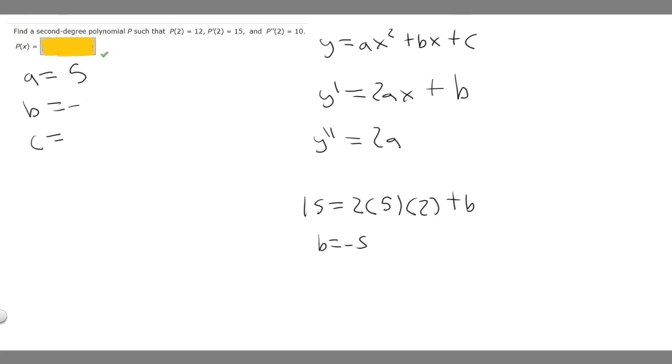Now that we've got b and a, we need to solve for c using this formula. y is 12, so 12 = a (which is 5) times x (which is 2) squared, plus b (which is -5) times x (which is 2), plus c.